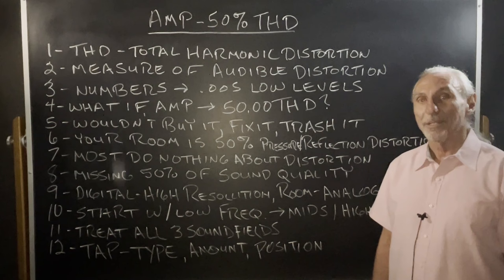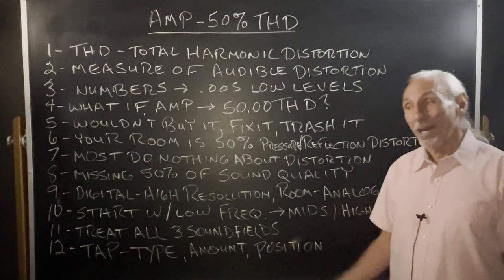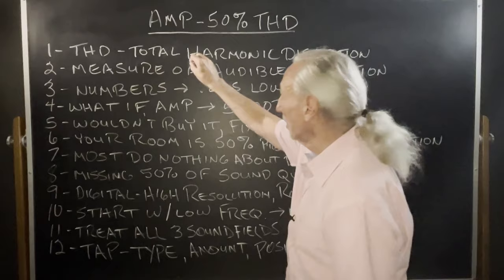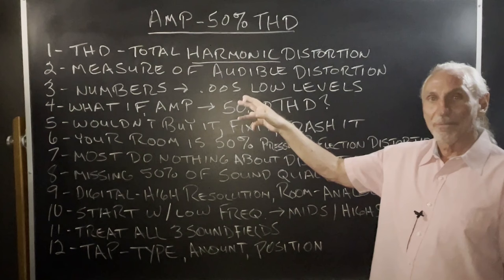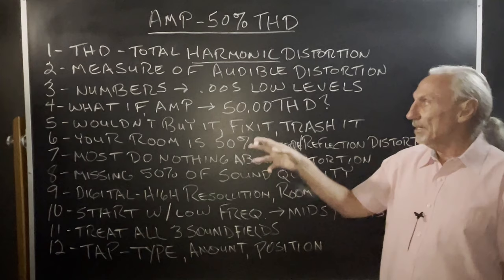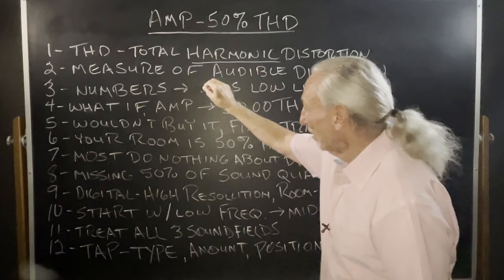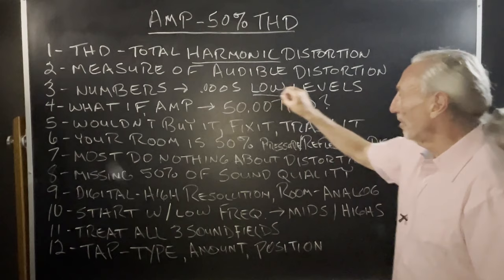THD stands for Total Harmonic Distortion. It's a measure of distortion, probably in the harmonic ranges. And we all know from past videos that harmonics are critical. The exact measurement numbers are very, very low — maybe 5 thousandths, maybe 5 ten-thousandths. But the bottom line is that it's a very, very low level of distortion.